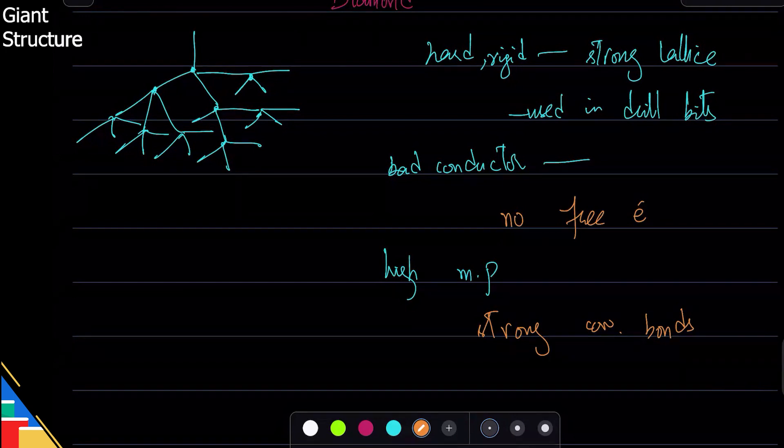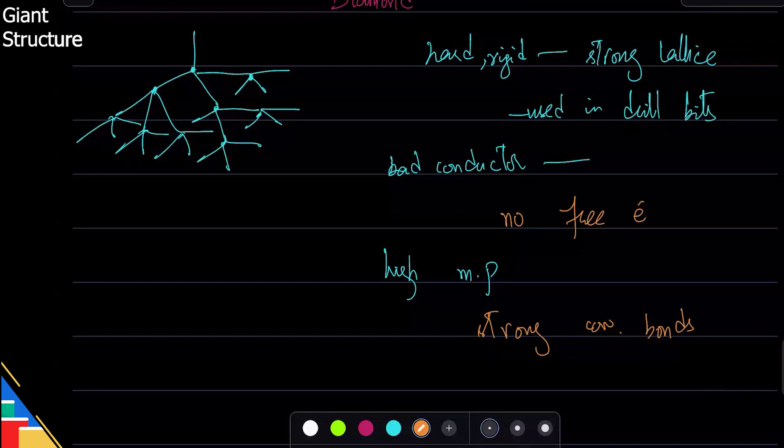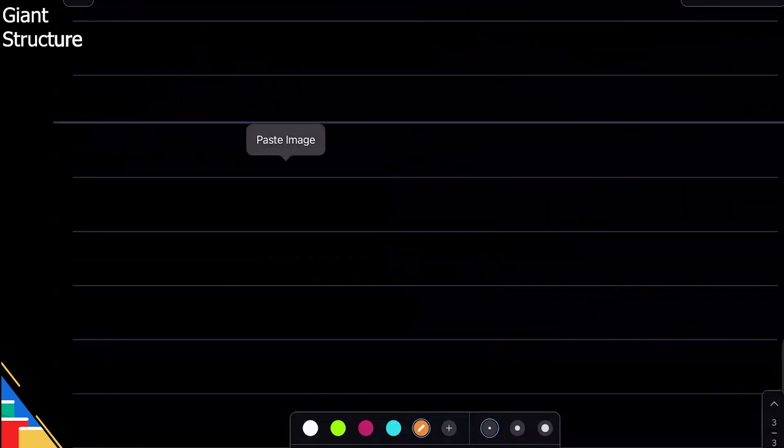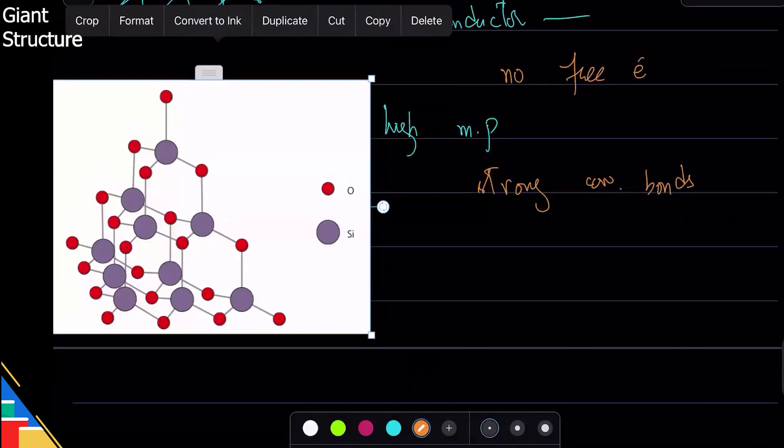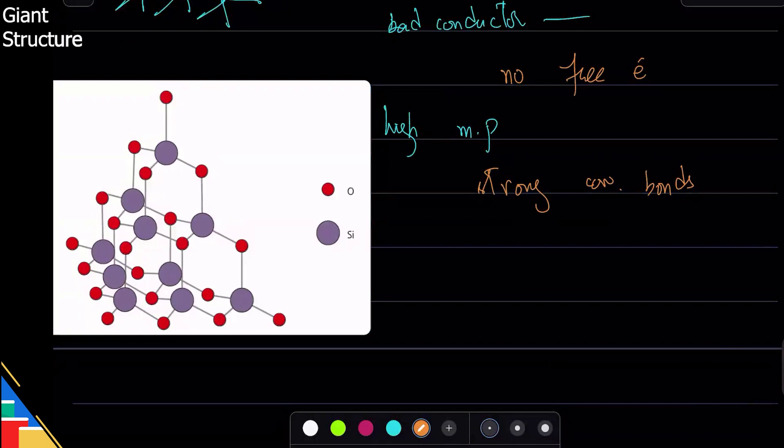So if I draw the diagram of silicon dioxide, you can see that the structure is so similar to diamond. You can see what happens: every silicon atom is joined with four oxygen atoms. So again the structure is tetrahedral.